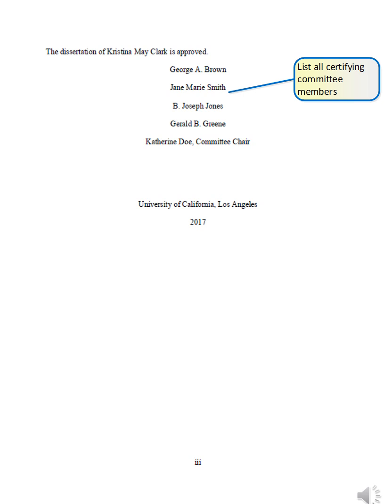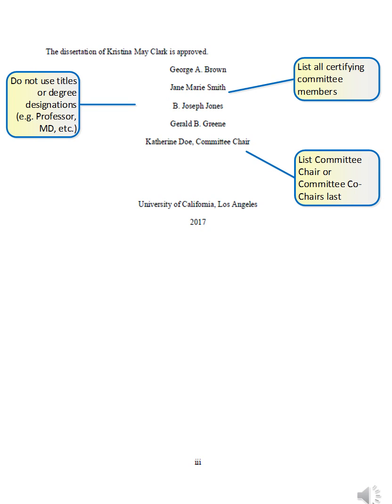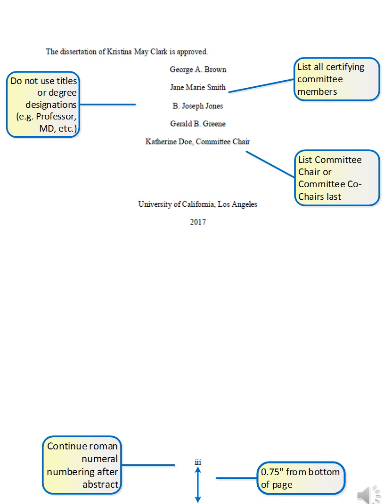After your abstract, you will include your committee page. You will indicate your dissertation or thesis is approved, then list all certifying members. Only certifying members will appear on this page. Please note, if you constituted your committee before fall of 2016 and one or more of your committee members is not certifying, do not include them on this page. For members listed, do not include title or degree designations. Your chair or co-chairs appear last. After their name, include a comma, then Committee Chair or Committee Co-Chair. Be sure to include the university name and year of submission slightly under your committee list. Page numbers continue as lowercase roman numerals 0.75 inches from the bottom of the page.